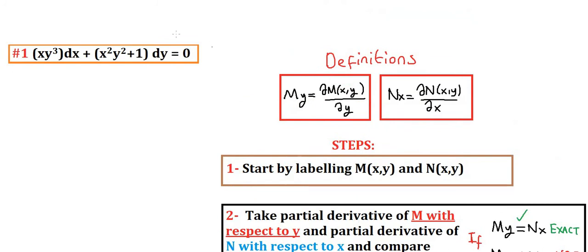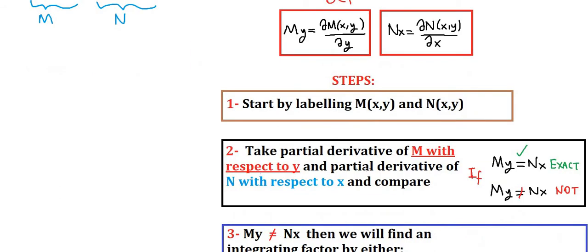On question number 1, we were given xy³ dx plus x²y² + 1 dy equals 0. We start by labeling some functions M and N. The dx and dy will help us define which one is M and which one is N. So this part of the differential equation is our M and this part is our N.